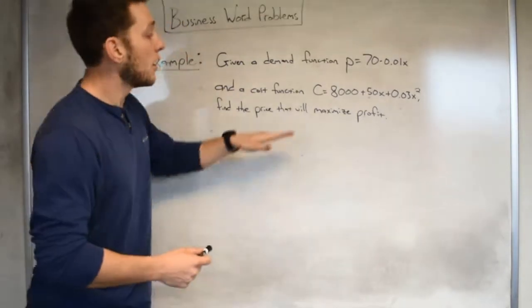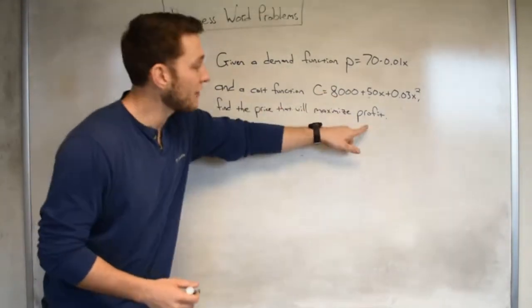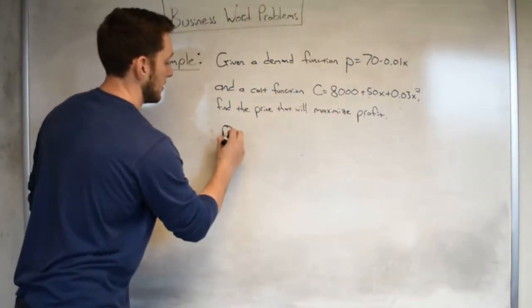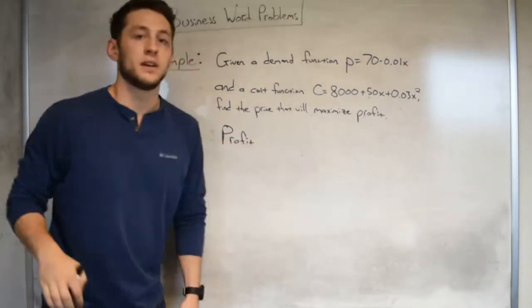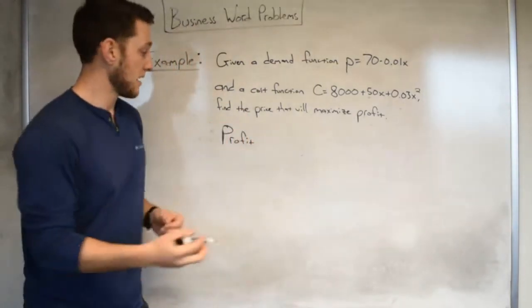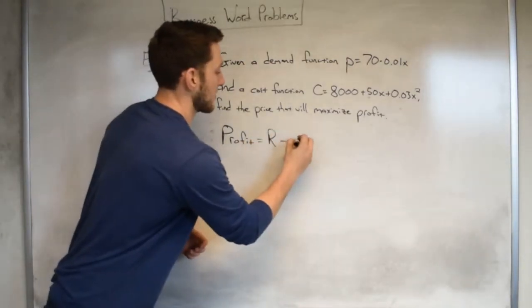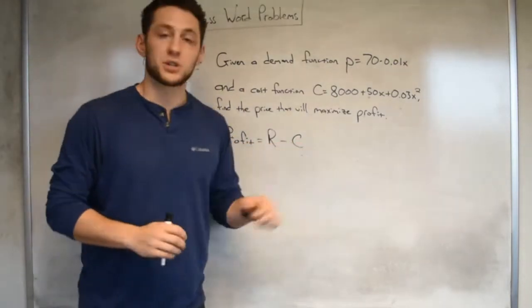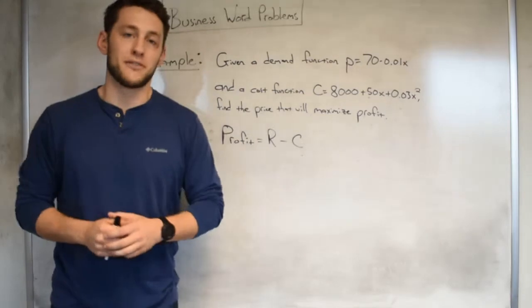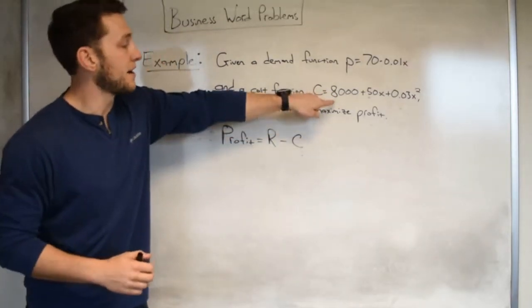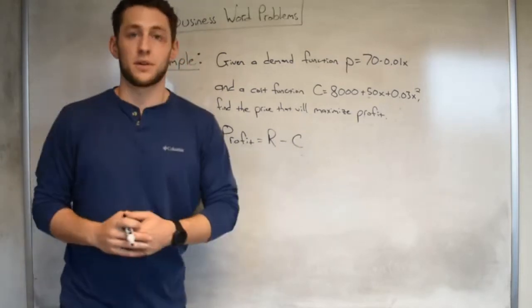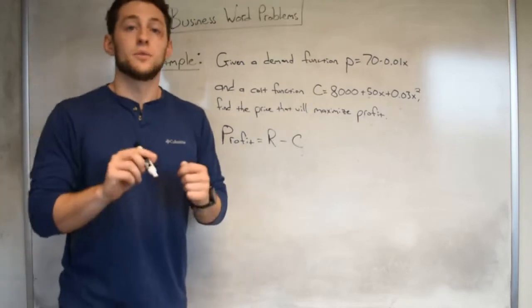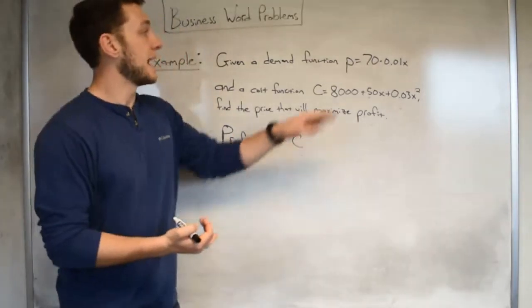Hopefully you're seeing some resemblance to section 3.4 in the last word problem section. First off, read through the problem, get a feel for it - we got demand, we got cost, we want something about profit. Secondly, hone in on the word maximize or minimize and get a function for the thing that you're maximizing. In this case we want to maximize profit. Remember, profit by the last slide was equal to revenue minus cost. Now it's our job to get a function for revenue and a function for cost that way we can combine it to a function for profit.